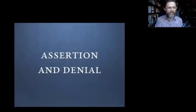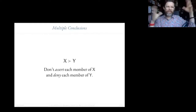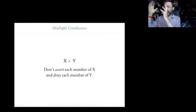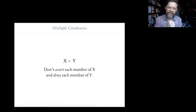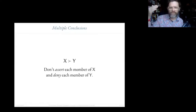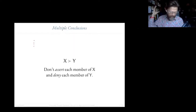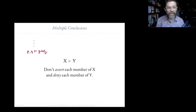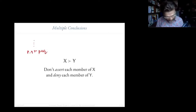First section: assertion and denial. The line I ran in 'Multiple Conclusions' was that if you see a derivation of a sequent in Gentzen's sequent calculus — which has got a bunch of statements on the left-hand side, a sequent separator, and a bunch of statements on the right-hand side — a way to understand the oomph of a derivation is that it's telling you: don't get yourself in a position where you're asserting everything on the left-hand side and denying everything on the right.